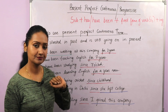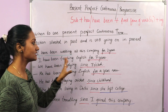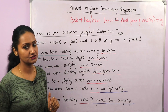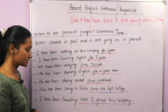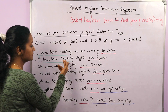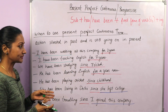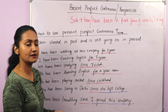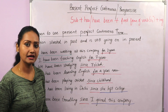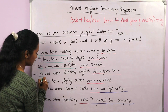The action of working started three years back and is still going on today — that is why we use present perfect continuous. Next: 'I have been teaching English for seven years.' 'Have been teaching' is the tense verb, 'teach' plus '-ing'. I started teaching seven years ago and I am still teaching today — the action is still going on in the present and might continue in the future. 'He has been learning English for a year now' — 'has been' is the verb tense.